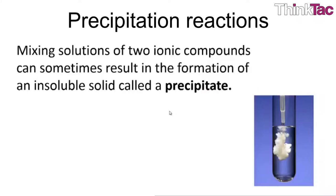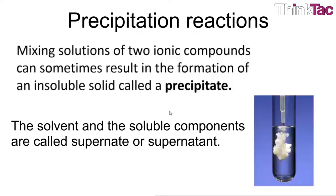Precipitation reaction happens when two aqueous ionic compounds combine to form at least one non-soluble ionic compound. The insoluble compound is known as the precipitate. The solvent and the soluble components are called the supernate or supernatant.